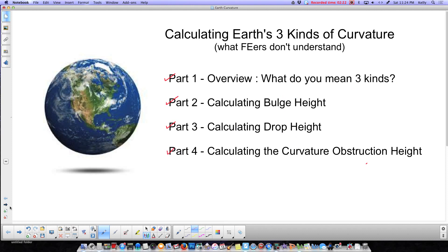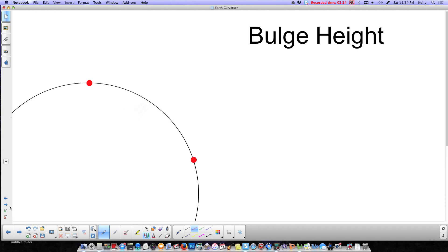So we'll first start talking about bulge height. Bulge height is if we take two points on the earth, and remember this is going from the earth's surface. Bulge height has nothing to do with how high you are above the earth. It's only from one place on the globe to another place on the globe. So if you were to dig a tunnel through the earth directly from one place to another, straight line, so that you could shine a laser through it, how far below the earth's surface would it be at its highest point? That is the bulge height.